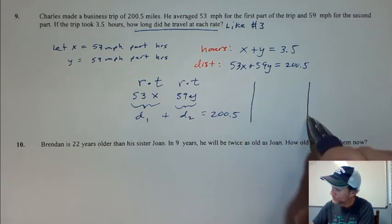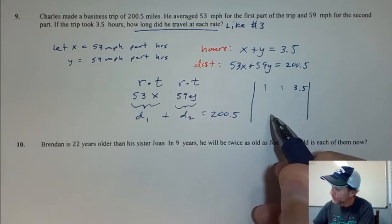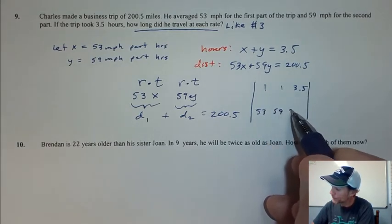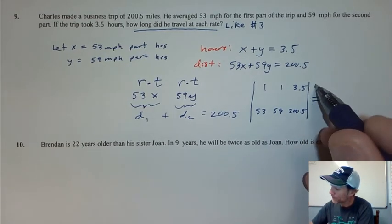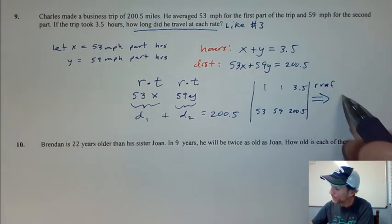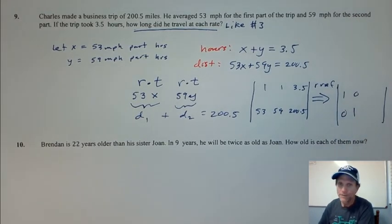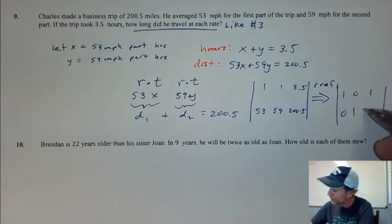My matrix is 1, 1, 3.5, 53, 59, 200.5. Perform a ref on that. And what I get is 1, 0, 1, and 1, and 2.5.